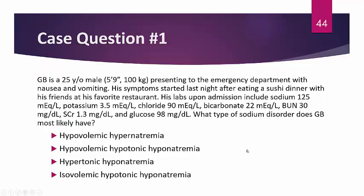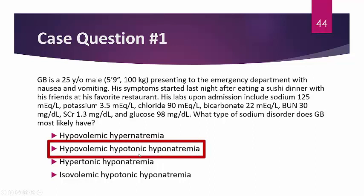Going over the case answers: GB is a 25-year-old male presenting with nausea and vomiting. His pertinent labs include sodium 125 mEq/L, chloride 90, elevated BUN 30, and serum creatinine 1.3. Calculating his osmolality using his BMP gives 266, which is less than 270 — indicating hypotonicity. His BUN-to-creatinine ratio is approximately 23 (30 ÷ 1.3), which is above 20, indicating pre-renal dehydration. Therefore, GB most likely has hypovolemic hypotonic hyponatremia.